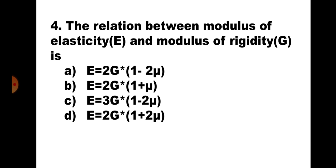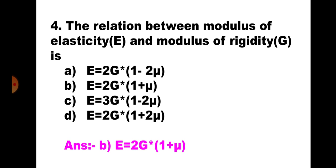This is the relation between E and G, and the correct relation is E = 2G(1 + μ). Hence, the correct answer is B: E = 2G(1 + μ).